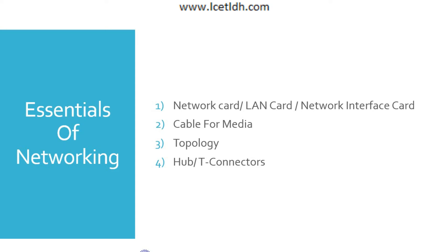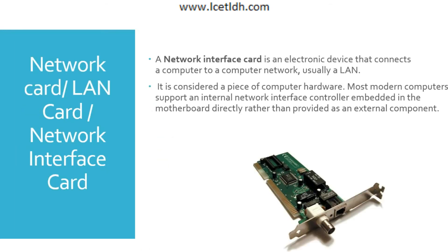Now moving to the essentials of networking — the things required to achieve networking. First, we have the networking card, also called the LAN card or Network Interface Card (NIC); these are all the same thing. Next we need cables for media transmission. Then we have topology, which is basically the arrangement of the network. We also have hubs and T-connectors. We will discuss all of these essential parts one by one.